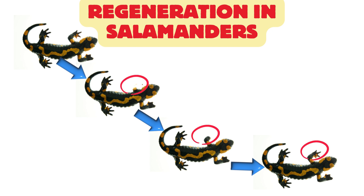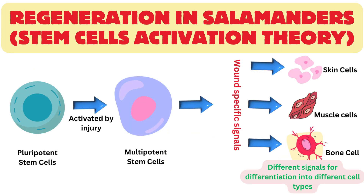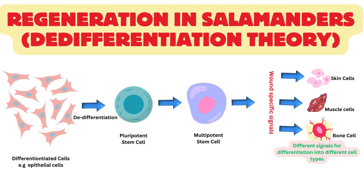Salamanders possess impressive regenerative abilities, with some species capable of regrowing lost limbs, tails, and spinal cords, and even parts of their hearts and brains. This remarkable process involves the activation of specialized cells at the site of injury, which undergo de-differentiation and proliferation to form a blastema — a mass of undifferentiated cells capable of giving rise to new tissues.